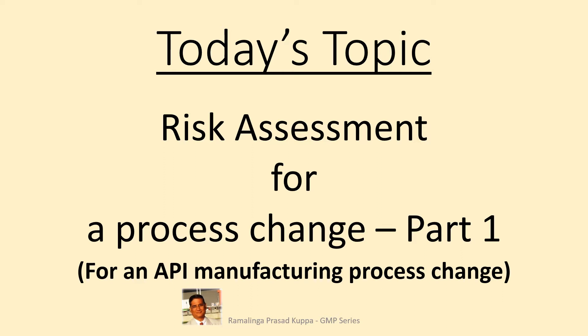Today's topic covers details about a process change in API manufacturing. This video takes you through a variety of risk elements that must be addressed to achieve an effective risk assessment report for mitigation. The listed elements are only a few typical elements; many other elements depending upon the process may be addressed. In this video part 1, it is limited to process-related changes only. In coming up parts of videos, we will learn about other types of changes.